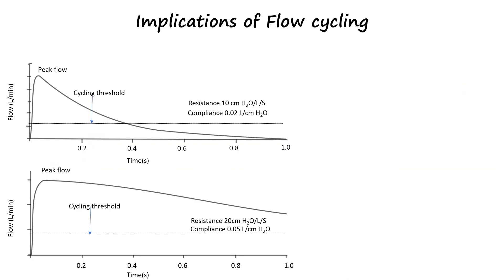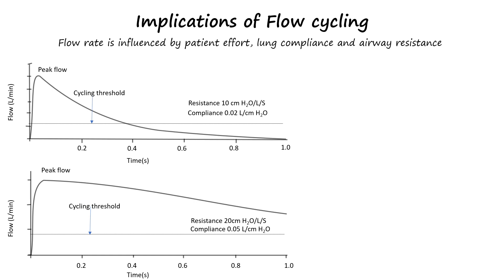The flow of air in the lungs is influenced by the patient's respiratory mechanics, including their effort, airway resistance, and lung compliance. As a result, the flow can vary significantly between patients and even between breaths for the same patient. Consequently, using a fixed percentage of the peak inspiratory flow as the cycling threshold can lead to considerable variability in the flow rates at which the machine transitions from inspiration to expiration.